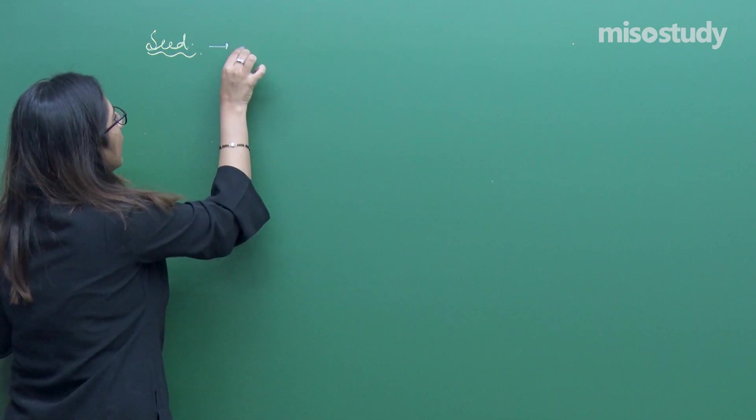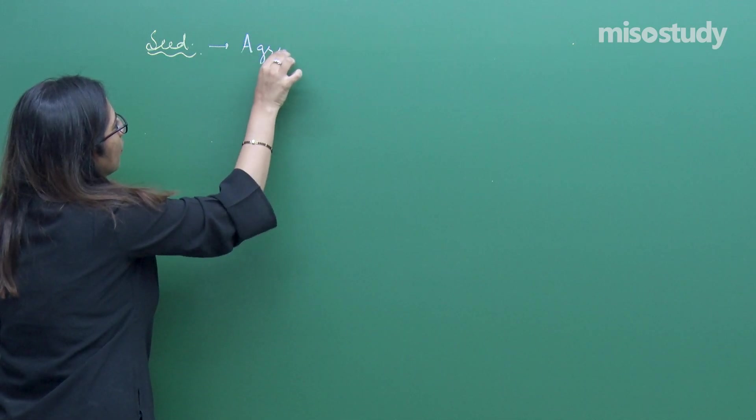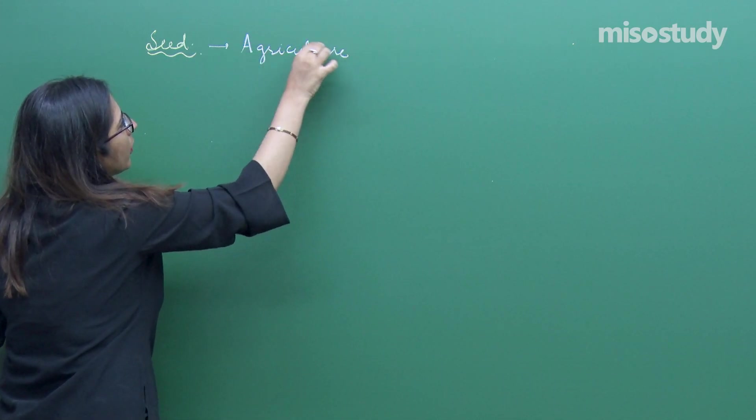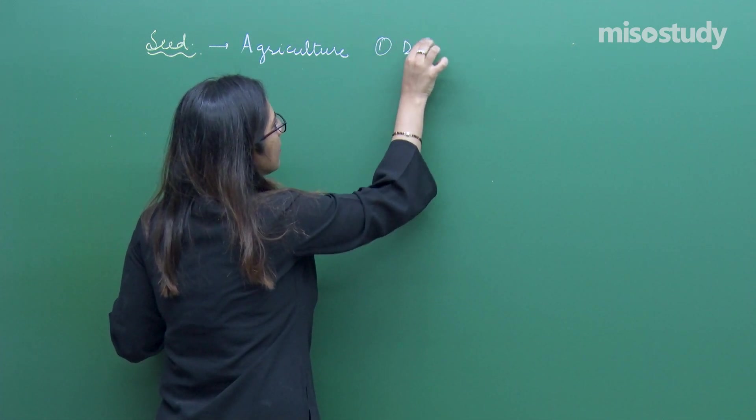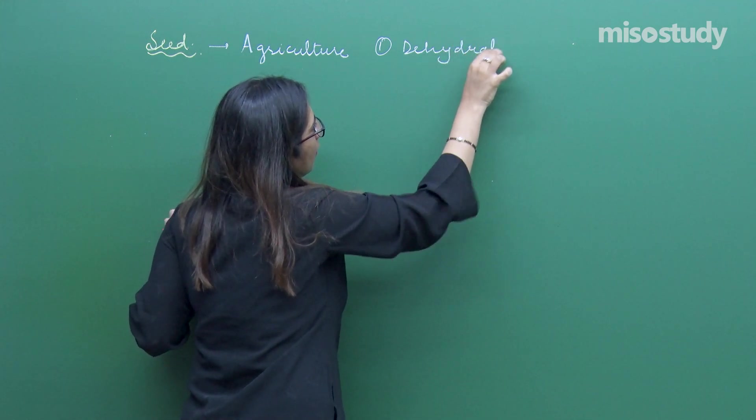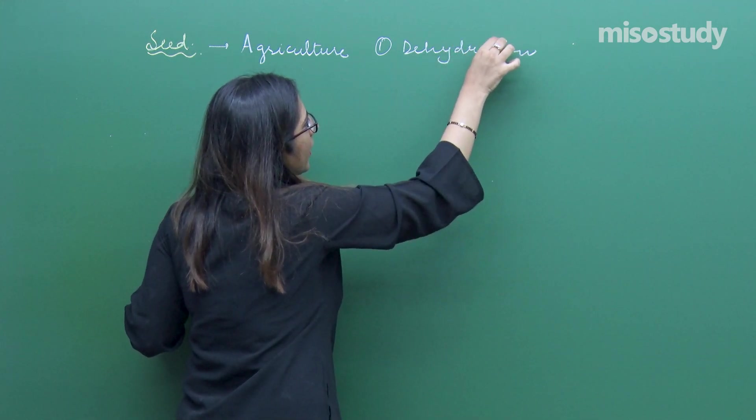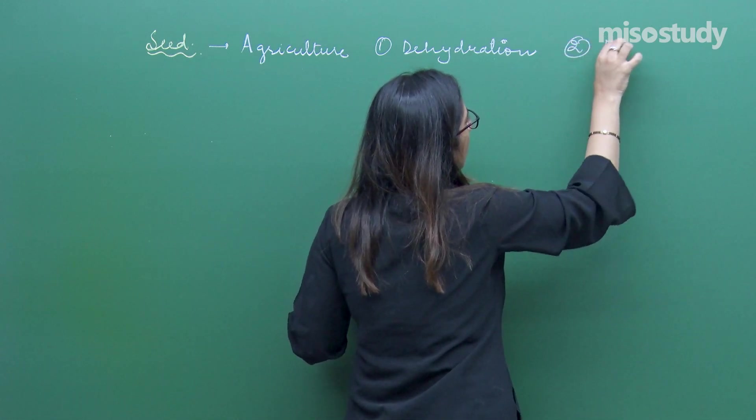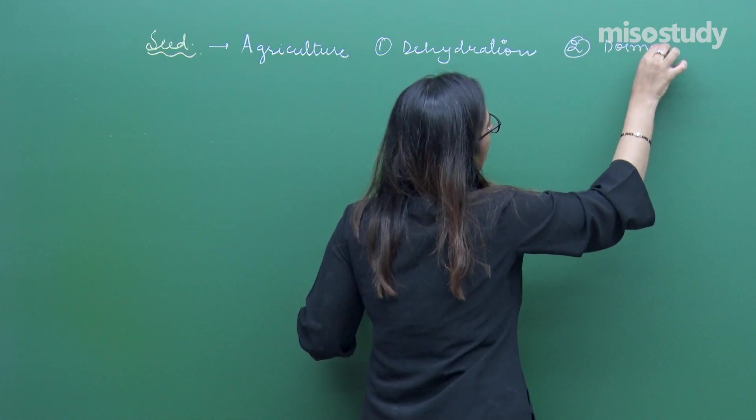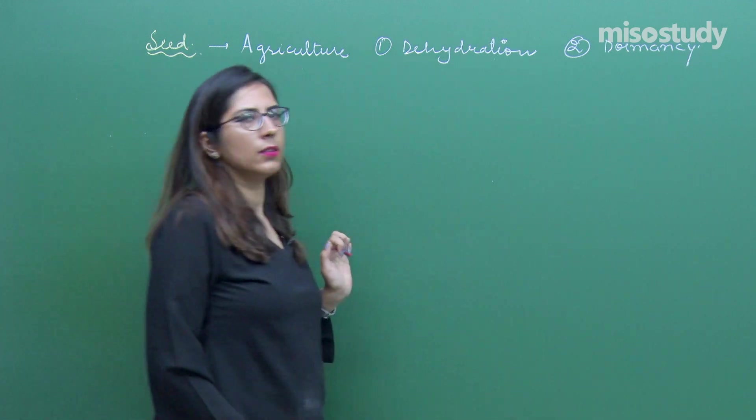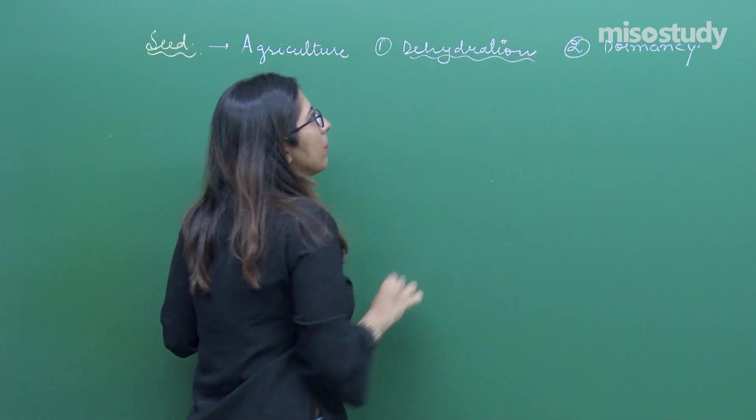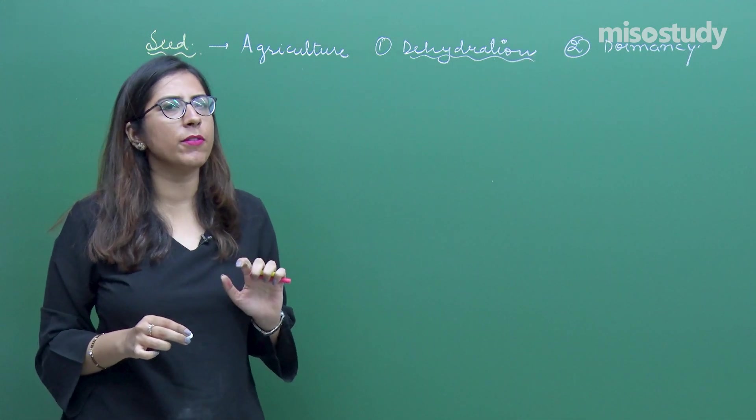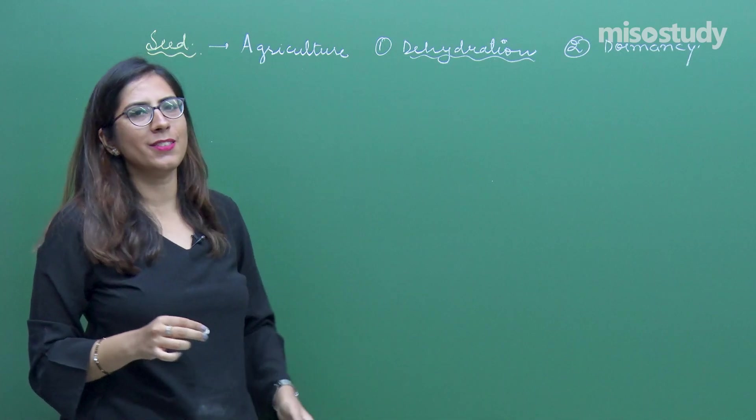These seeds play a very important role in agriculture because they show two processes: one is termed as dehydration, and second is termed as dormancy. The removal of water from them but still they are in viable condition. Once they will get all these favorable conditions, that is actually a dormancy stage.